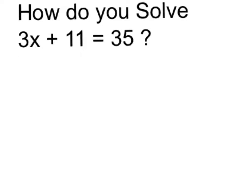So let's undo it by first subtracting 11 on both sides. On the left side, the plus 11 and minus 11 cancel, leaving us with 3x. And on the right side, 35 minus 11 is 24.